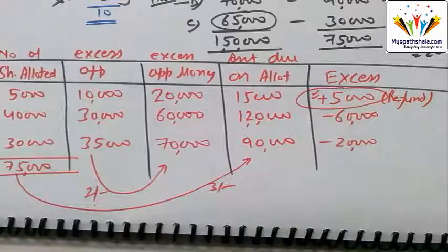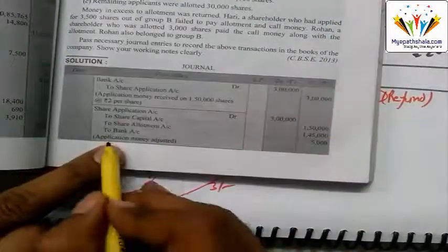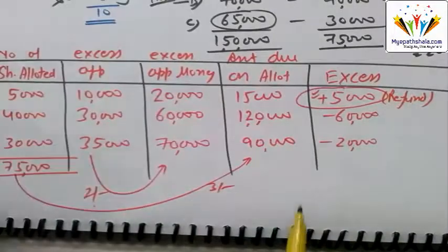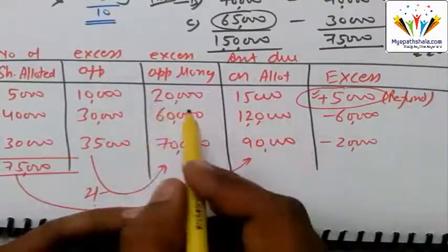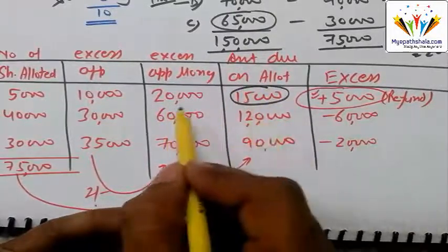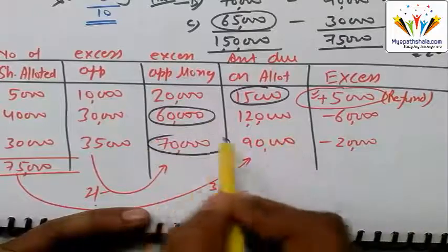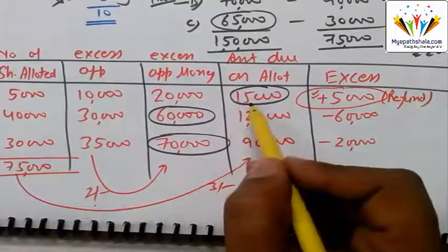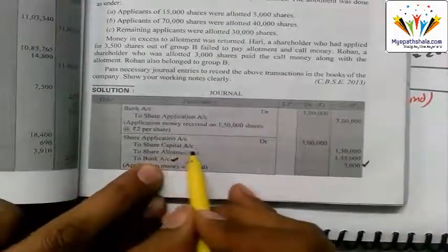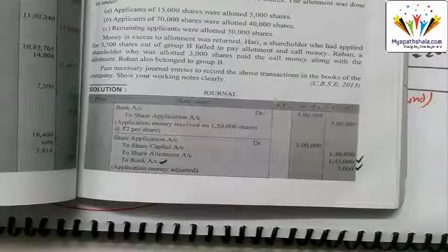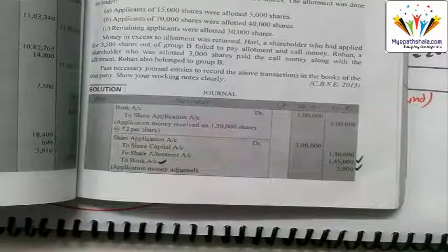We can now easily find the excess/shortfall: Group A — application money received 20,000, needed 15,000, so 5,000 is excess and will be refunded. Group B — 60,000 received, need 1,20,000, so there is a shortfall. Group C — 70,000 received, need 90,000, shortfall. Refund is only for Group A: 5,000. Transfer to allotment is whichever is lower — giving totals of 15 + 60 + 70 = 1,45,000 transferred.